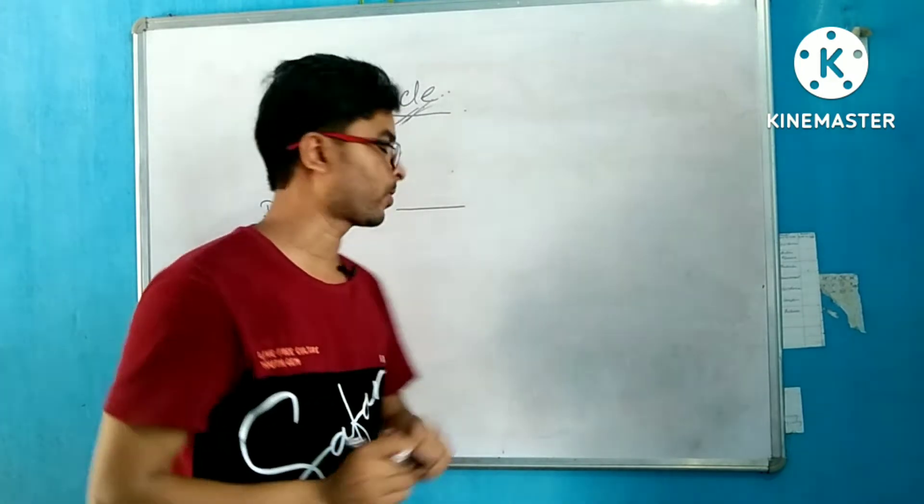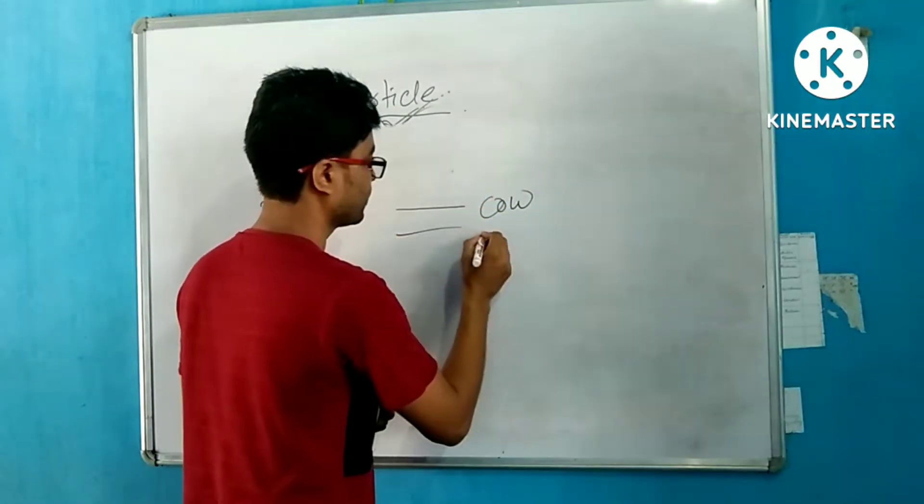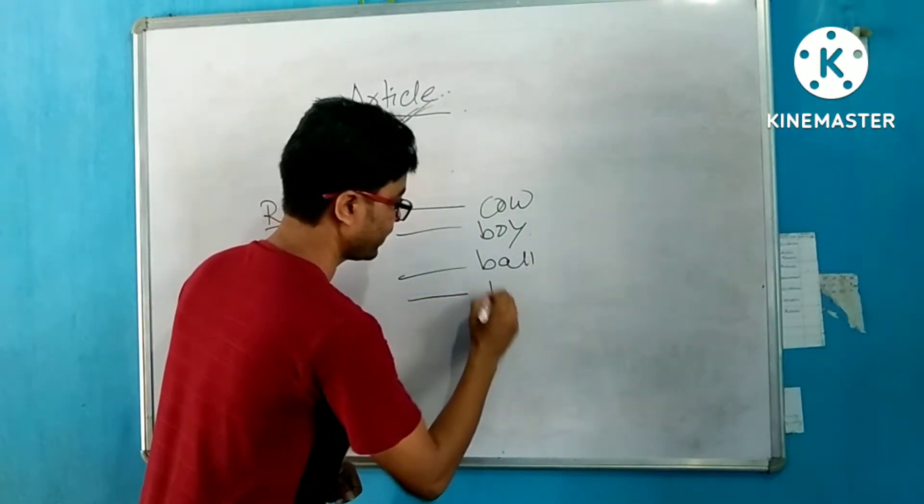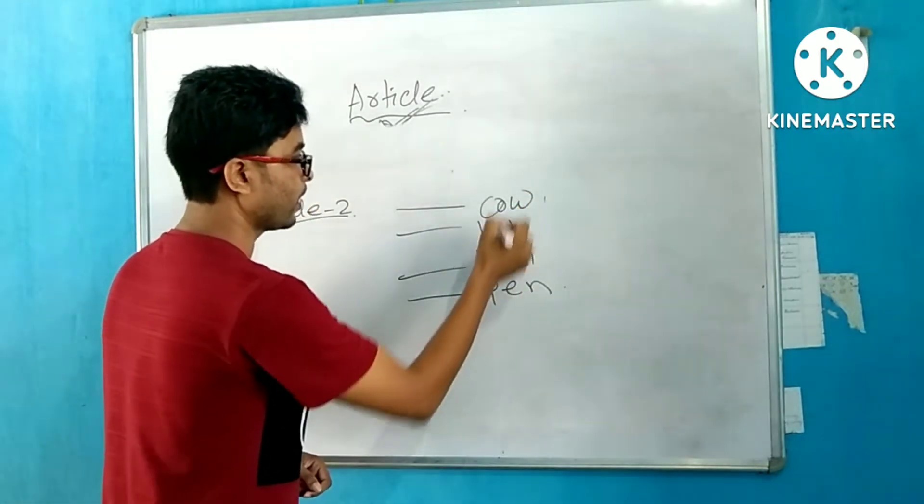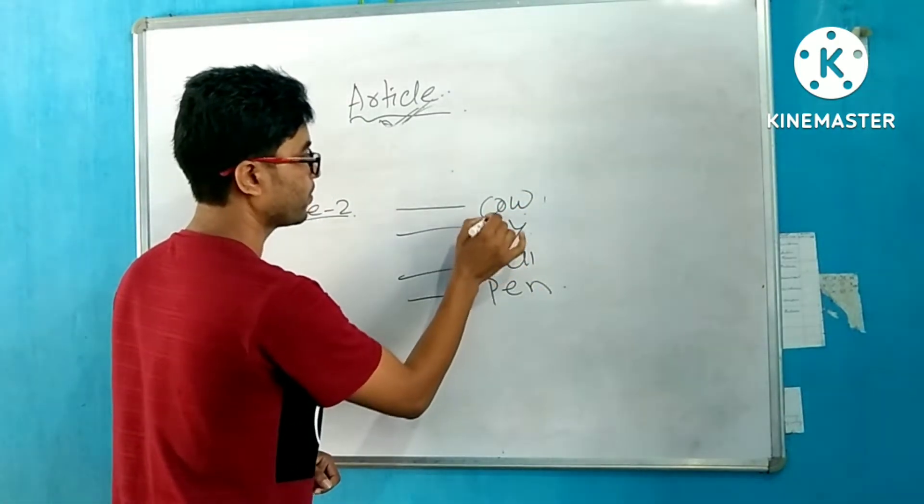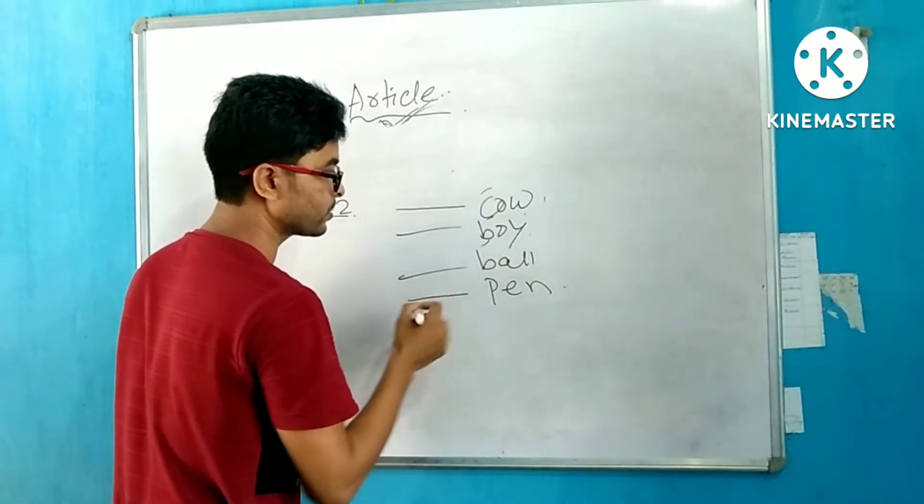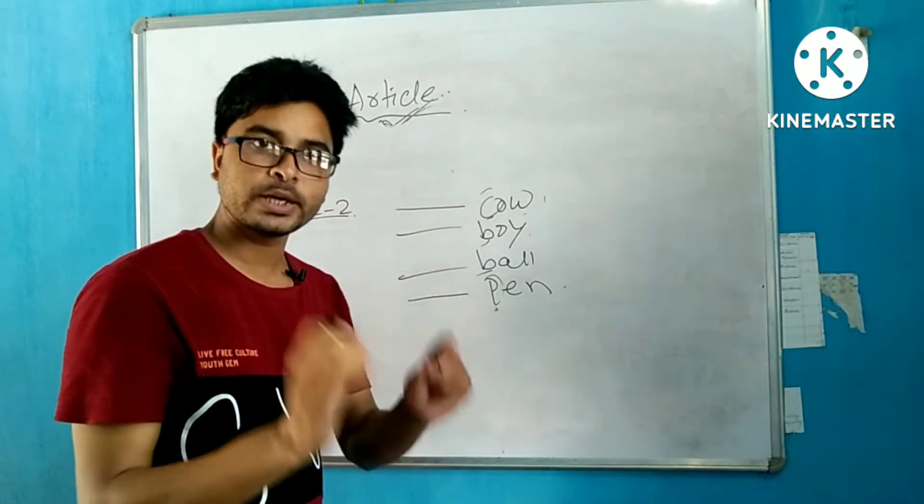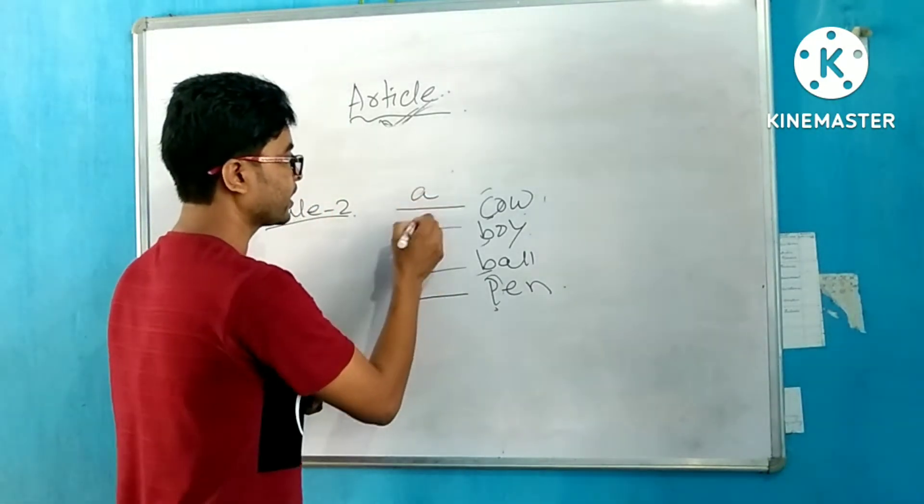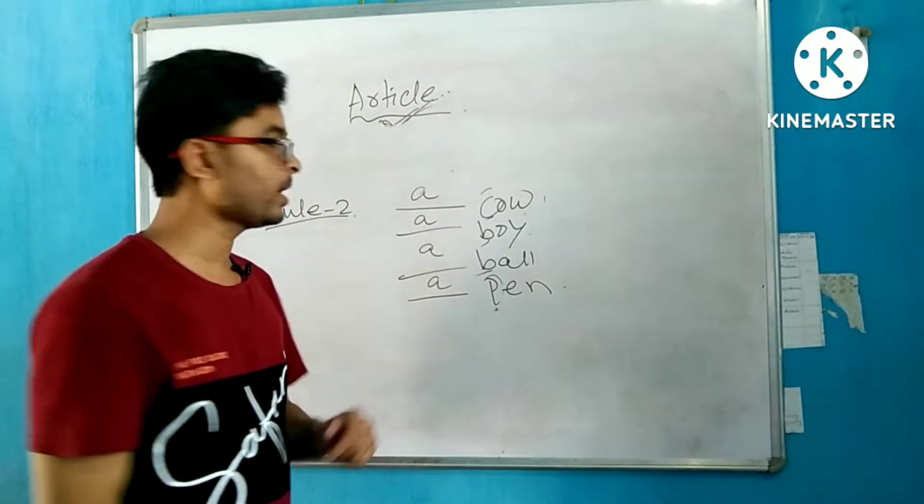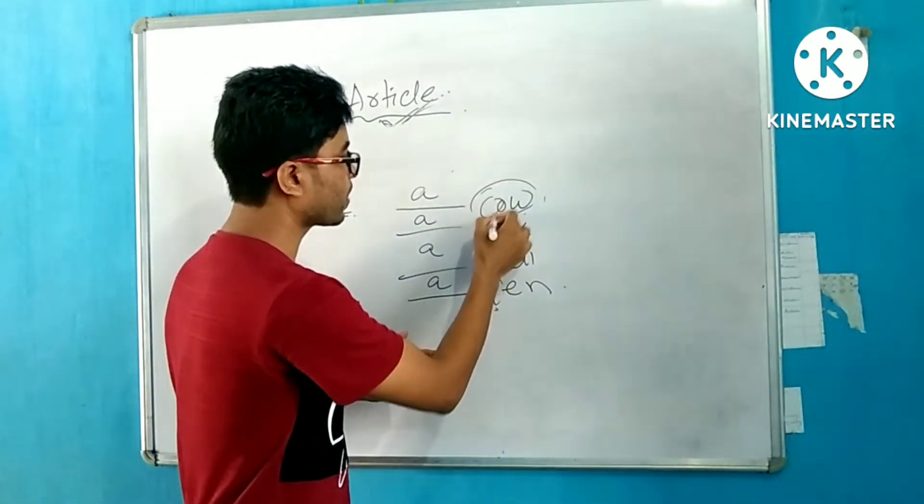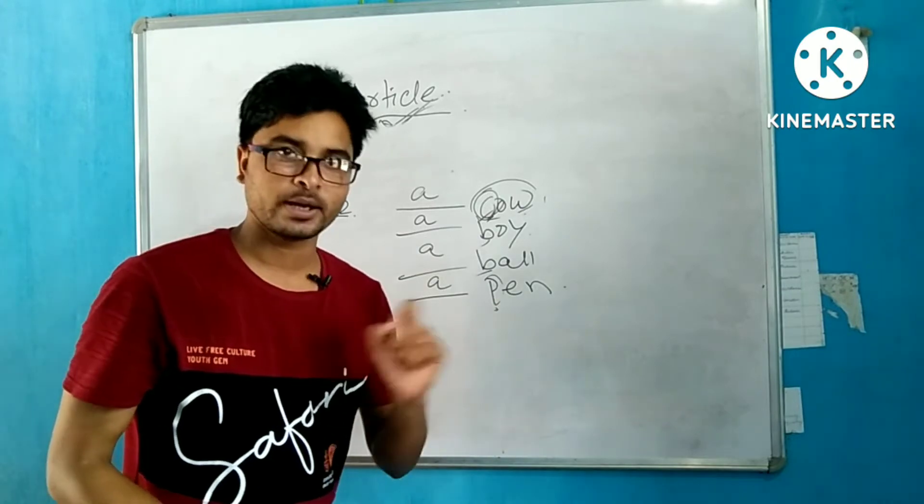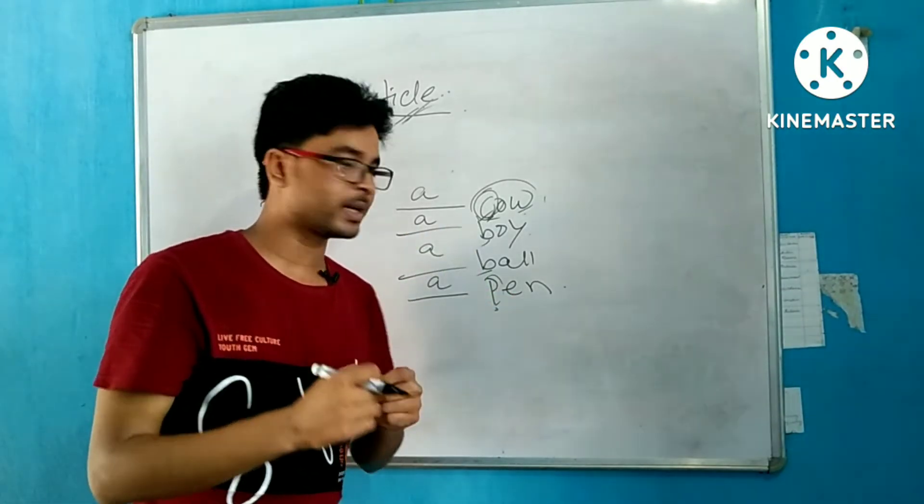For consonant examples: cow, boy, ball, pin. Each of these starts with a consonant - C, B, B, P respectively. So we use A article: a cow, a boy, a ball, a pin.